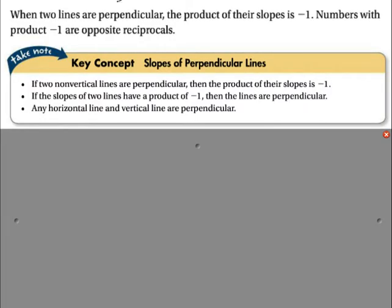Now we're going to switch gears to perpendicular lines. When two lines are perpendicular, the product of their slopes is negative 1 — they are what we call opposite reciprocals. Our key concept: if two non-vertical lines are perpendicular, then the product of their slopes is negative 1. The converse is: if the product of the slopes of two lines is negative 1, the lines are perpendicular. Also, all horizontal and vertical lines are perpendicular to each other — for example, y equals 3 and x equals 1 would be perpendicular lines.